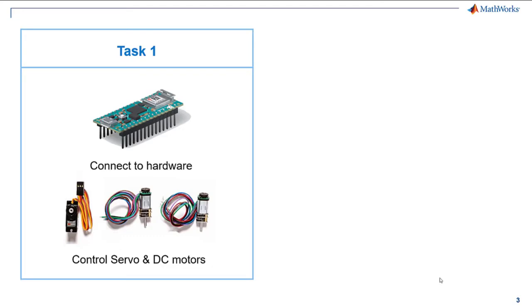In task 1 we'll first connect Arduino with MATLAB, then in the same task we'll control the servo and the DC motors. The servo will help us turn on or off the marker and we will use the DC motors to move the drawing robot on the whiteboard.